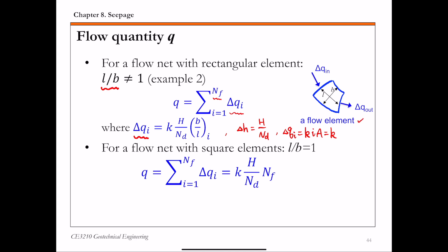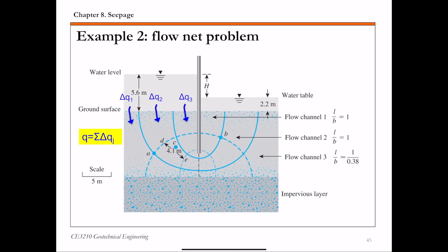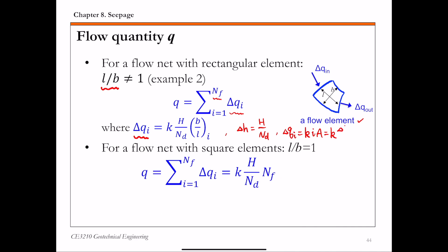For a single flow element, the hydraulic gradient i is delta h over the length l of the flow element. The cross-sectional area A perpendicular to the flow is simply b. Substituting delta h as capital H divided by nd, and multiplying by b over l, you get the full expression for delta q_i. That's for a flow net with rectangular elements.